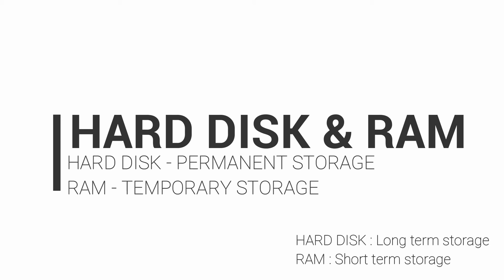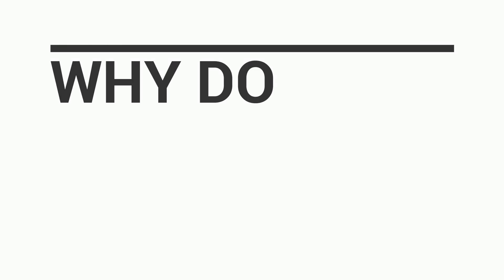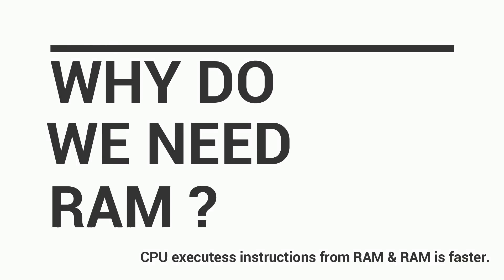Why do we need RAM when we have a hard disk? Accessing RAM is thousands of times faster than a hard disk. That is why programs do not execute directly from the hard disk. Instead, they first go to RAM and from RAM they are executed.